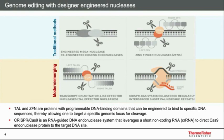As background on genome editing, there are traditional methods you may be familiar with: engineered meganucleases or zinc-finger nucleases. More recently, we used transcriptional activator-like effector nucleases called TAL effectors, or the CRISPR-Cas system — Clustered Regularly Interspaced Short Palindromic Repeats. TAL and zinc-finger nucleases are proteins with programmable DNA binding domains that can be engineered to bind a specific DNA sequence. CRISPR-Cas, however, is an RNA-guided DNA endonuclease system that leverages short non-coding RNA to direct the Cas9 endonuclease to the DNA target site.